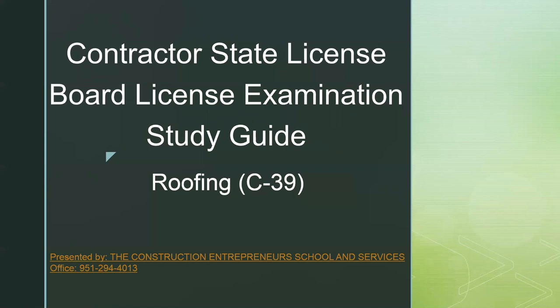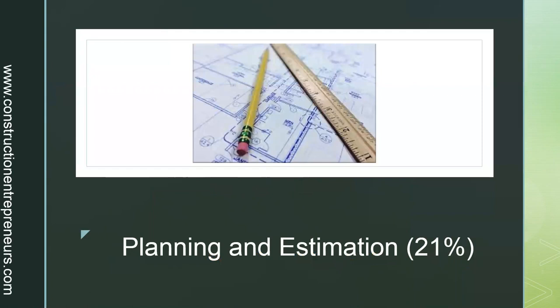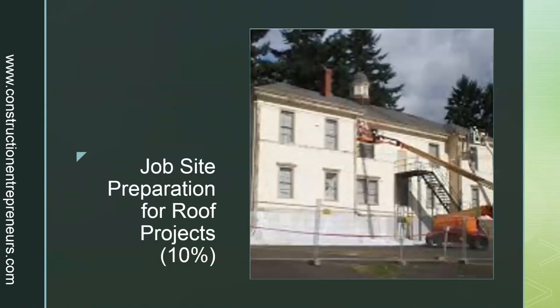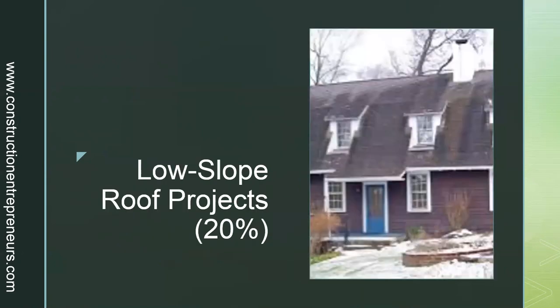Let's get started. The roofing C39 examination is divided into five major sections. The first section is planning and estimation at 21%, covering two sections: planning roof projects and estimating roof projects. The next one is job site preparation for roof projects at 10% of the examination, covering three sections: protecting surroundings, correcting problems, and tearing off existing roofing.